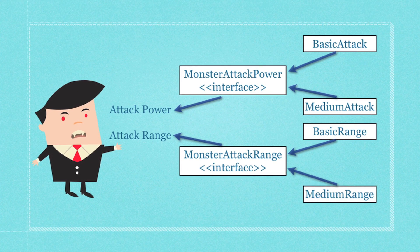Basically, what I'm going to do here with my abstract factory is pop different types of monsters out of factories. One of the potential monsters is going to be a vampire, and it is going to have, as an attack, an object assigned to it. The potential objects assigned to this are either going to be basic attack or medium attack, and they are going to be chosen because they both implement the same interface. So attack power is going to be of type MonsterAttackPower, which is ultimately going to be a basic attack object or a medium attack object.